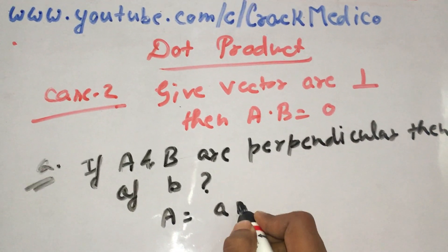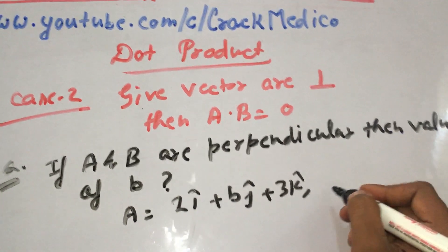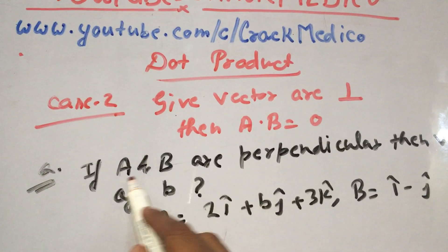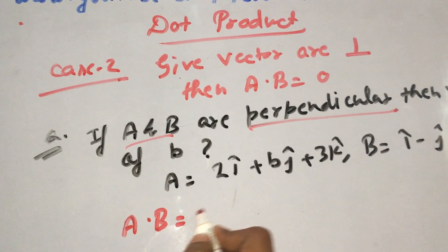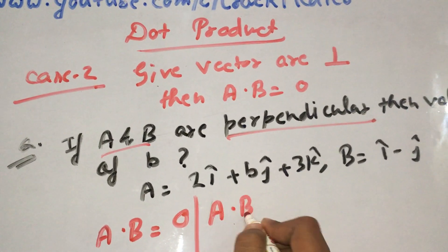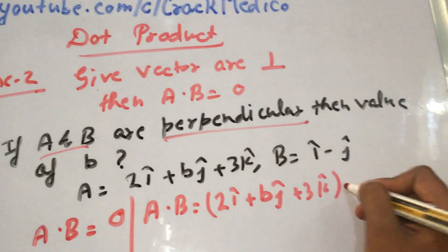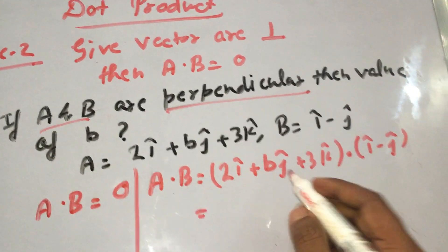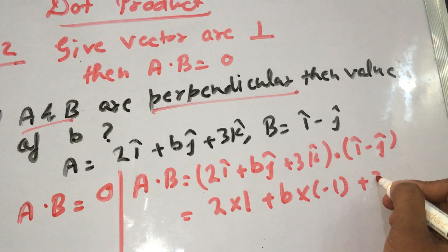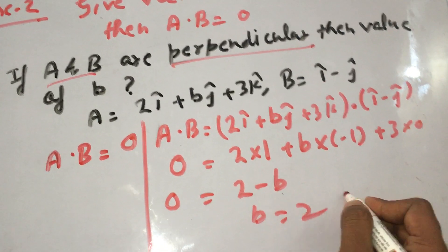Since the vectors are perpendicular, A·B equals 0. So A·B equals (2i plus b·j plus 3k) · (i minus j). Multiply: coefficient of i gives 2 into 1, plus coefficient of j gives b into minus 1, plus coefficient of k gives 3 into 0. So 0 equals 2 minus b, which means b equals 2.